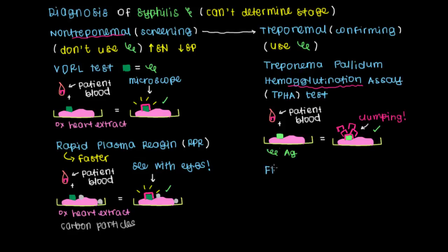The last of the treponemal tests I'll mention is what's referred to as a fluorescent treponemal antibody absorption test, which in some places you might see abbreviated as FTA-ABS. So an FTA-ABS test.